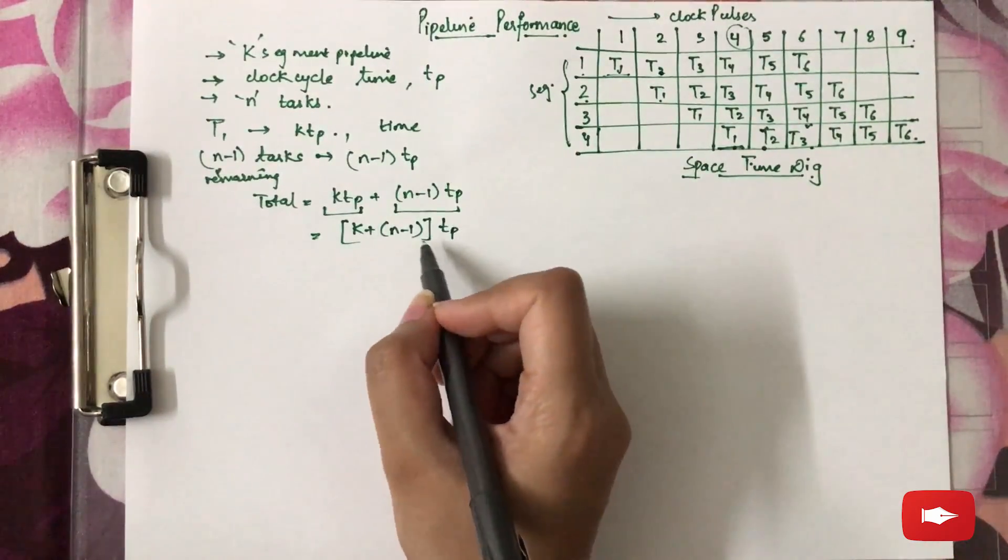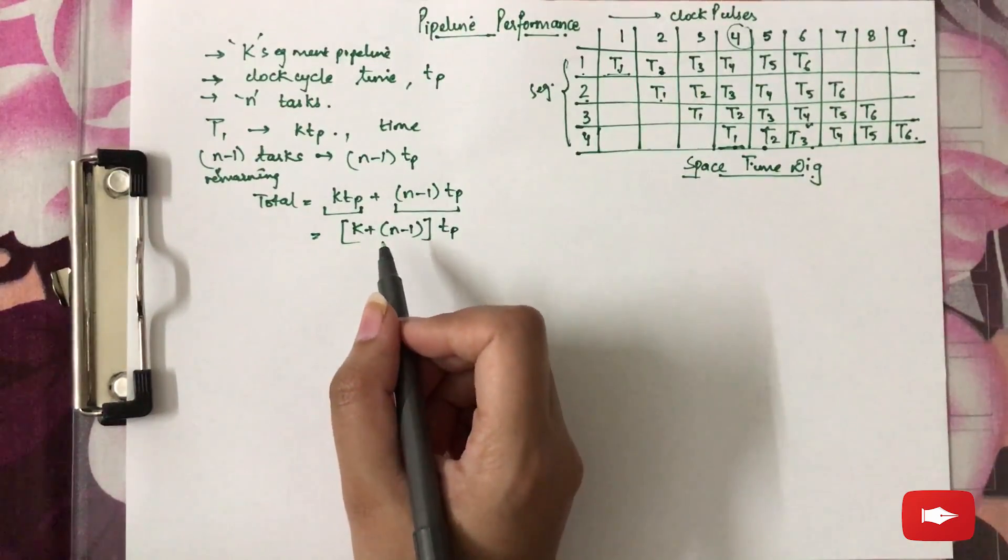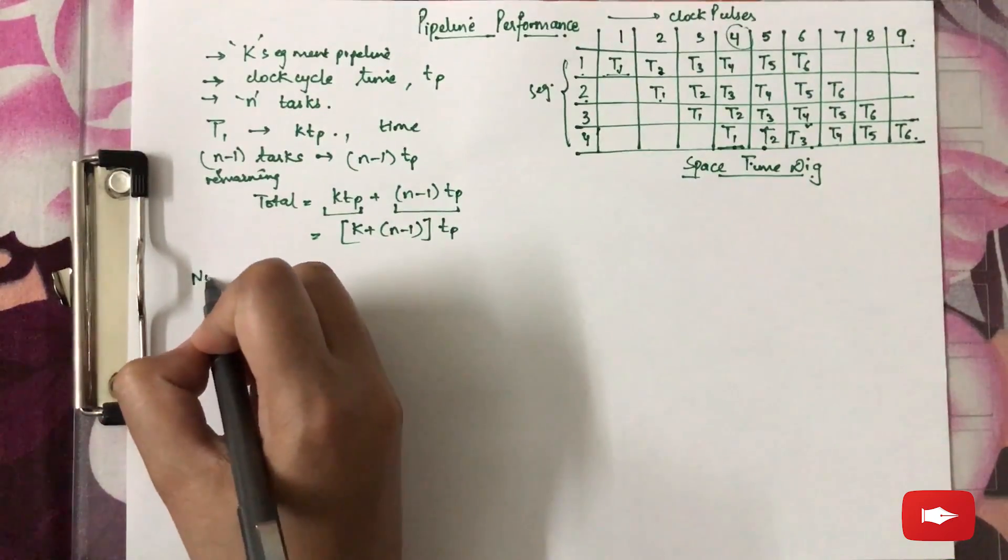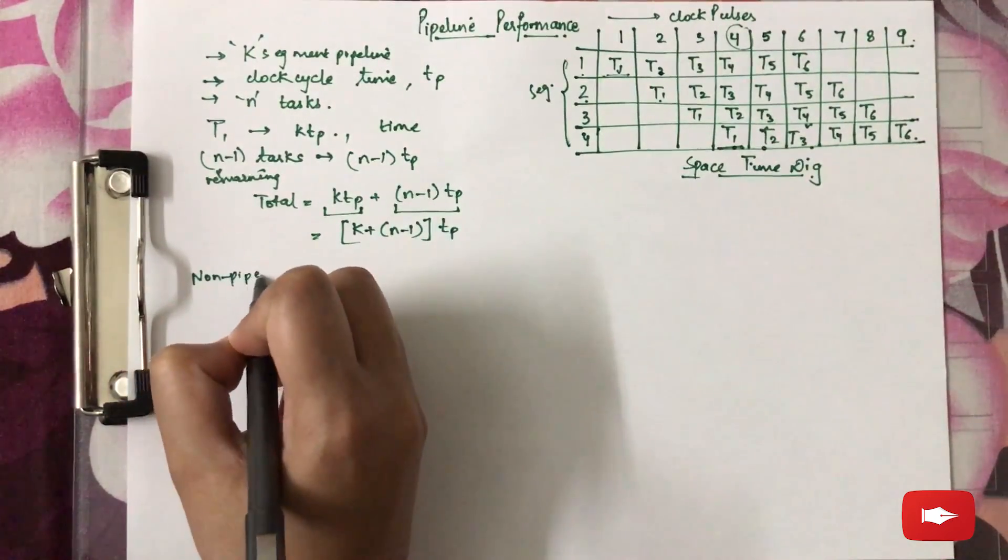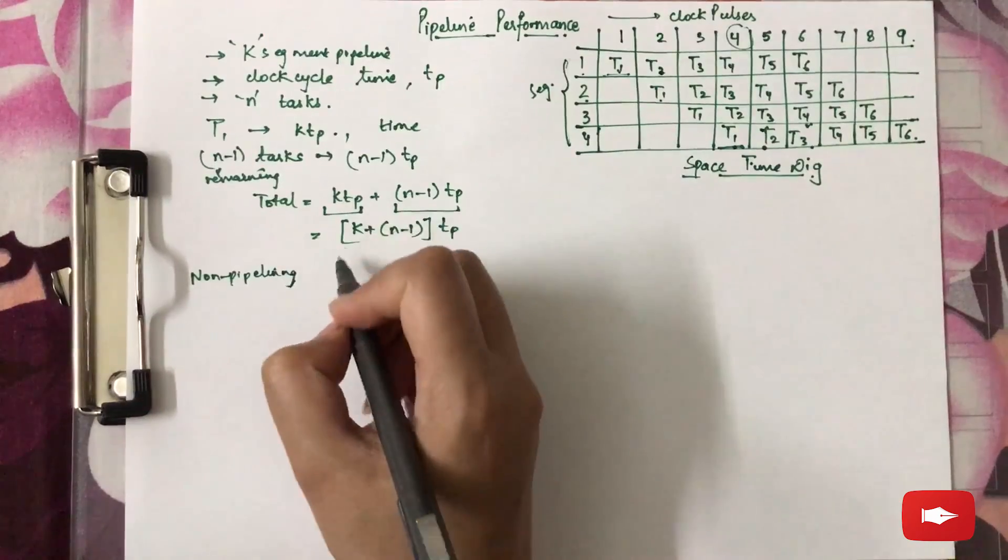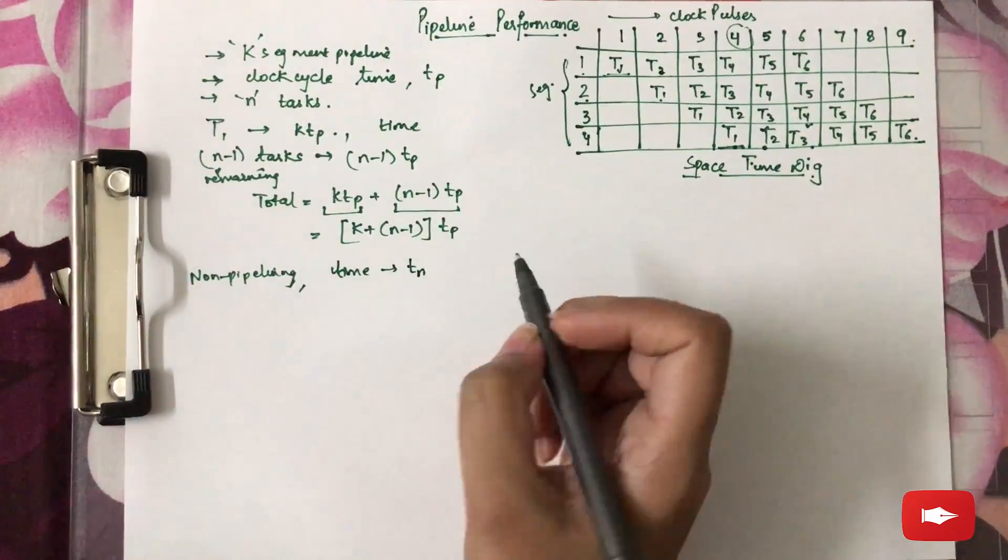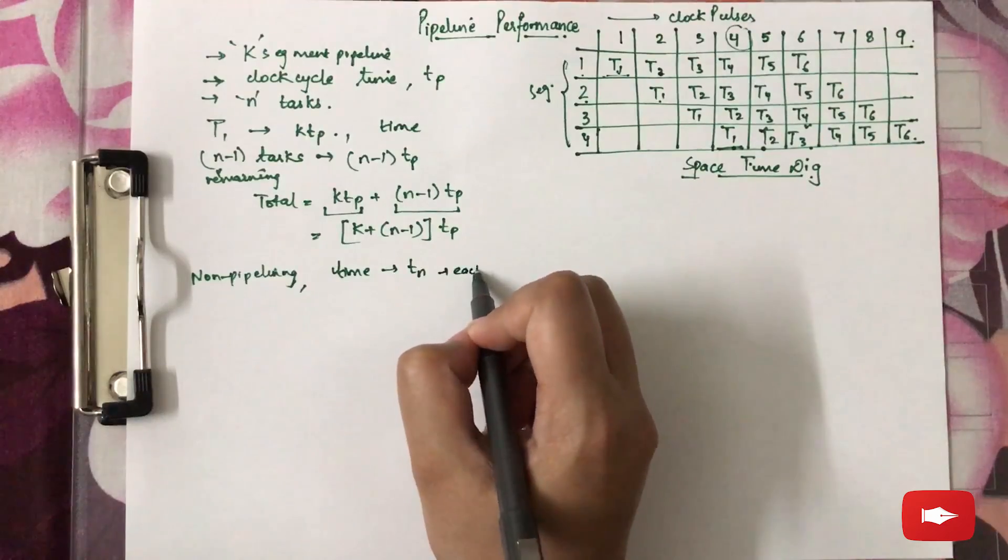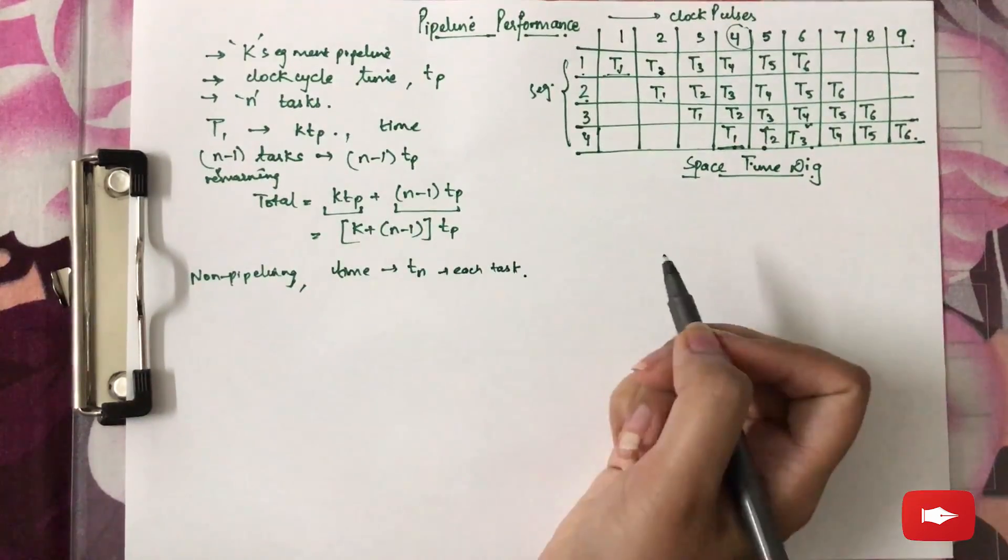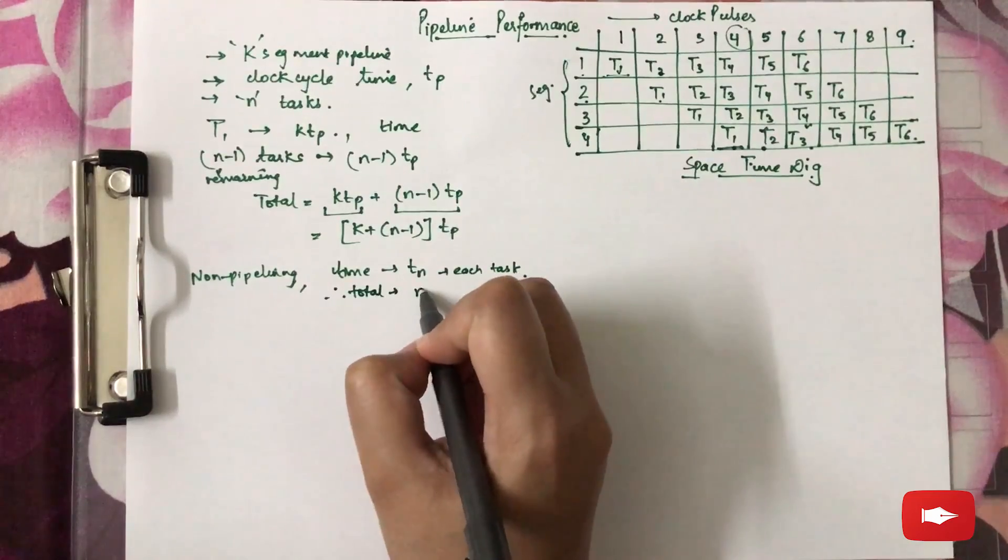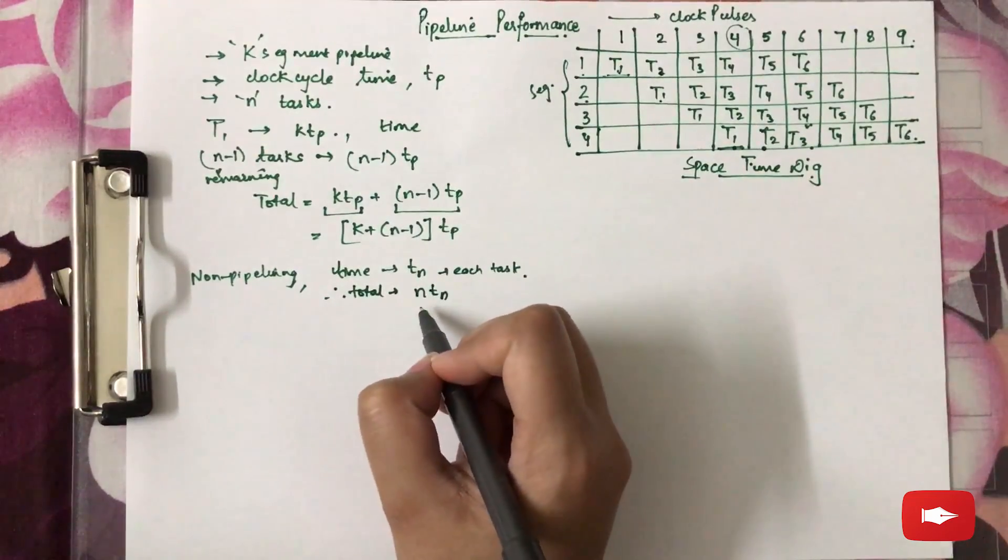This is the total time required for the pipelining process. Now for non-pipelining, let's assume the time to be denoted by TN for each task. Therefore, total time will be N×TN, where N is the number of tasks.